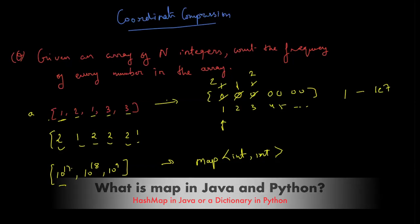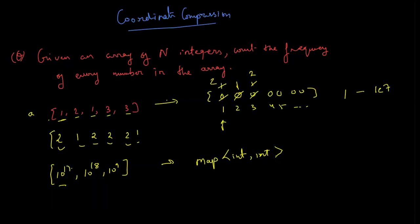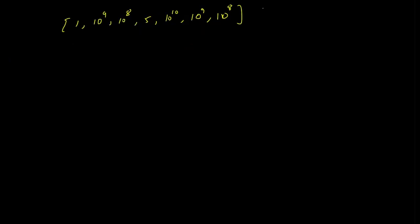But then if I don't want to take a map, how can I do it using arrays? So this is where coordinate compression comes in. Let's understand. So let's say you're given this array, you've got to find the frequency of every one.